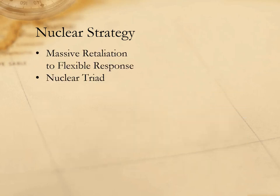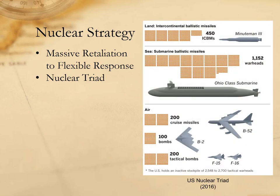As Soviet nuclear stockpiles continued to grow, the US increasingly realized that its doctrine of massive retaliation wouldn't actually deter Soviet behavior. The Cuban Missile Crisis showed that the USSR would continue to secure its own interests regardless of nuclear threats. As a result, the US switched its nuclear policy to a doctrine of flexible response — the idea that the United States would maintain a sufficiently flexible military posture to respond to Soviet aggression through both conventional and nuclear means. The flexible response doctrine depended on the maintenance of a nuclear triad: a combination of land-based intercontinental ballistic missiles (ICBMs), sea-based submarine-launched ballistic missiles (SLBMs), and strategic bombers.